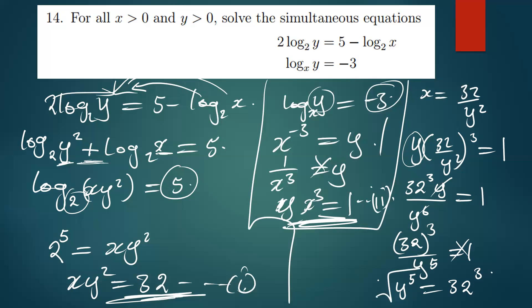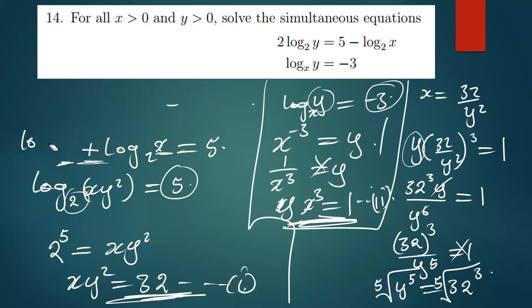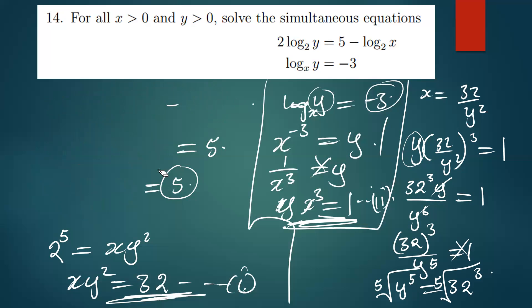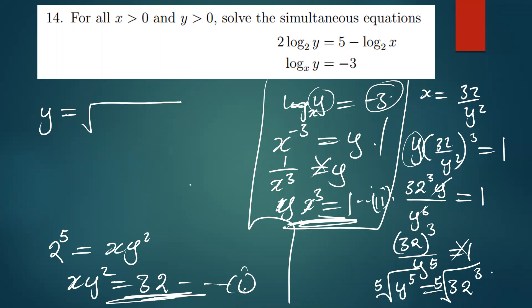From there we find the fifth root of both sides. Now the value of y: 32³ = 32,768, and the fifth root of 32,768 is 8. So y is simply equal to 8.